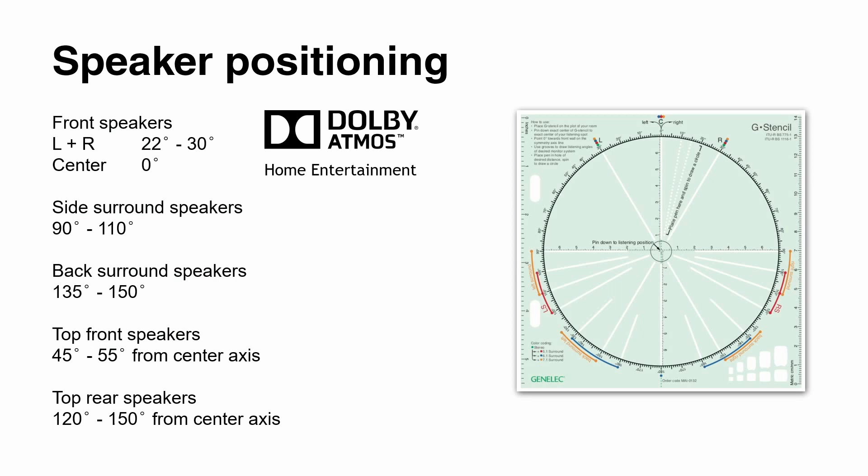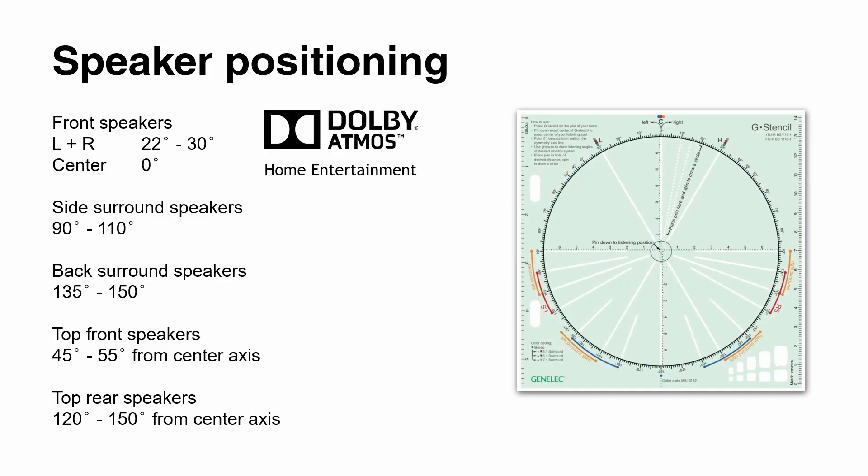For the back surrounds, there is a window of 135 up to 150 degrees where you can mount them. For the top speakers, it's simple: draw a line from your listening position up to the ceiling, fold 45 degrees to the front, 45 degrees to the back, and then 45 degrees to the left and right — that's where you place your speakers. Interestingly, going toward 40–45 degrees also overlaps with where Auro 3D height layers are mounted, meaning it's possible to install speakers that accommodate both formats.